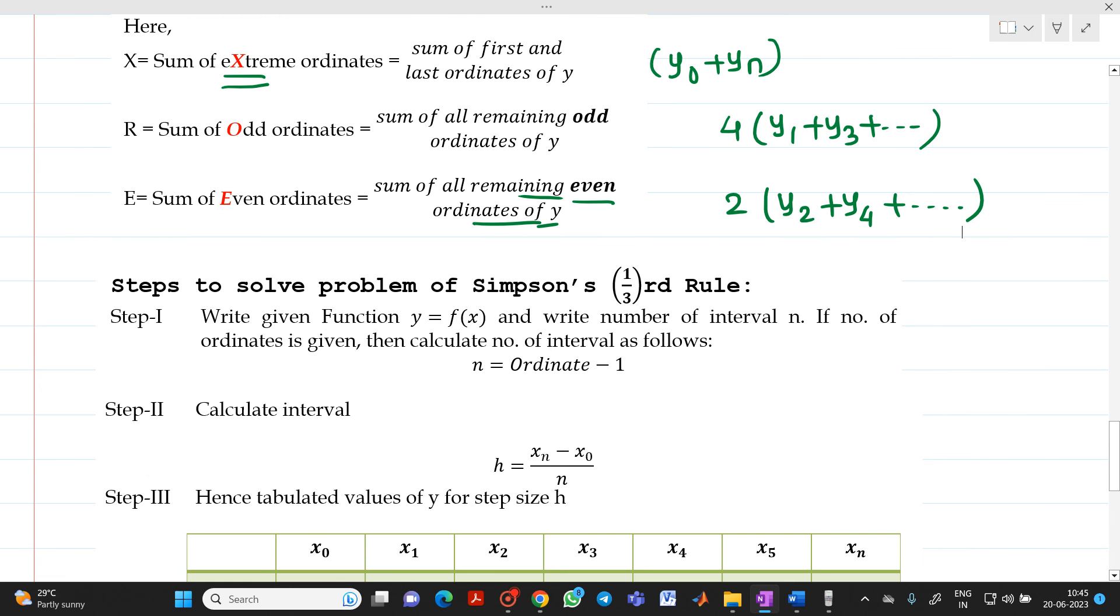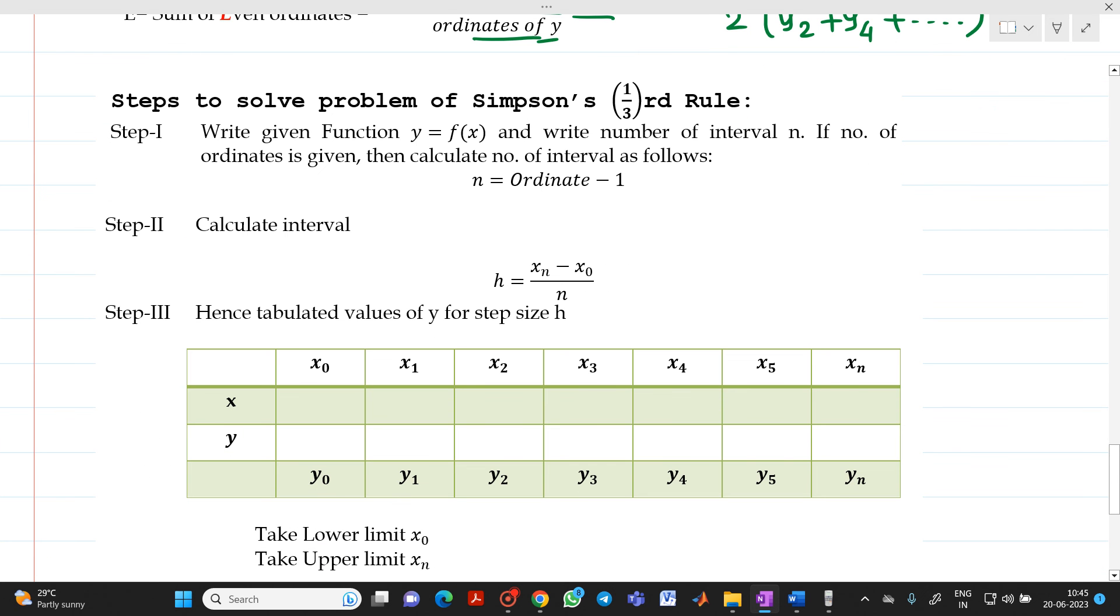Now, what is the method with the help of which you can solve the problem of Simpson's one third? So, write the given function, write the number of intervals if it is given and if the data is given in the form of ordinate, then we will be able to find n will be equal to ordinate minus 1. If you know the value of n, then we will be able to find the value of h which is xn minus x0 divided by n. Sometimes, in the problem h might be given, so in that case you will be able to find n, that is number of interval as xn minus x0 divided by h. h is the step size, n is the number of interval.